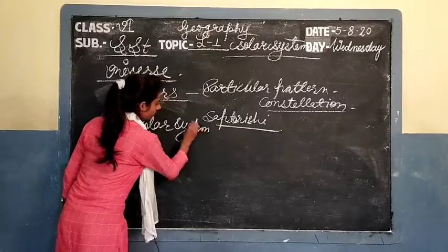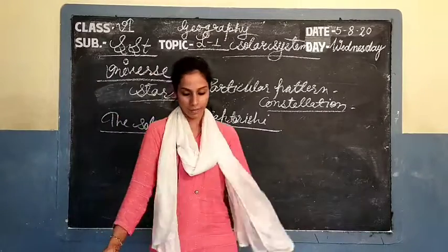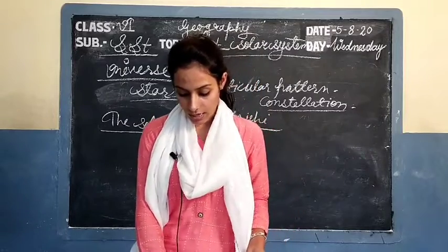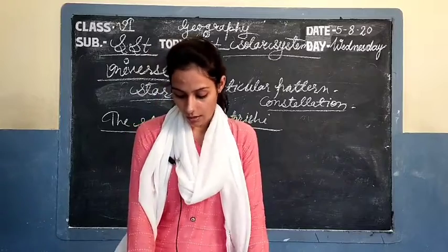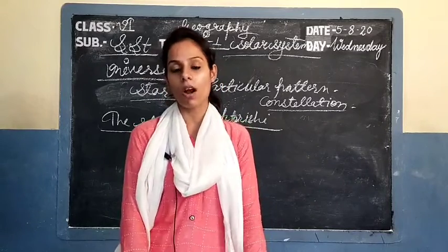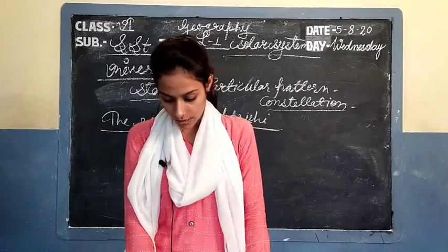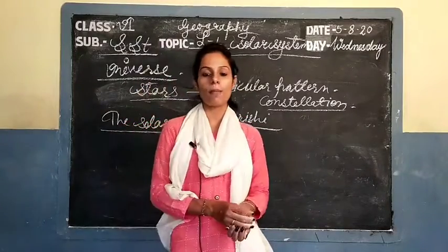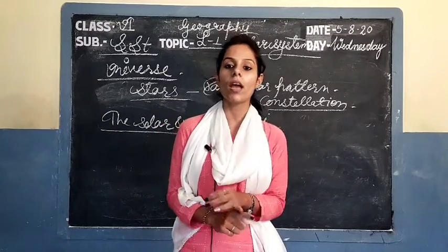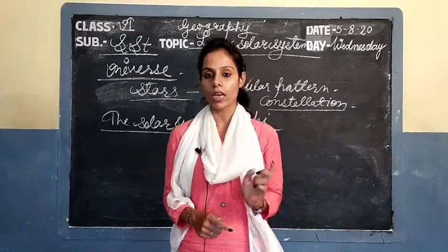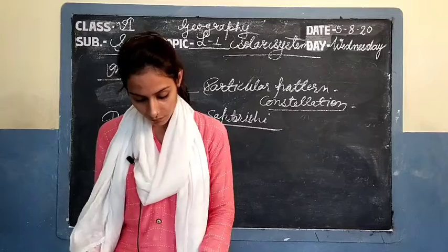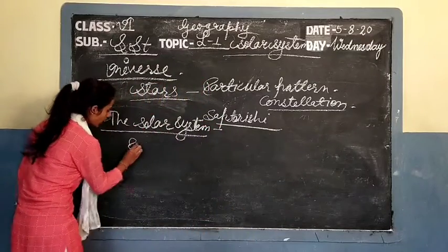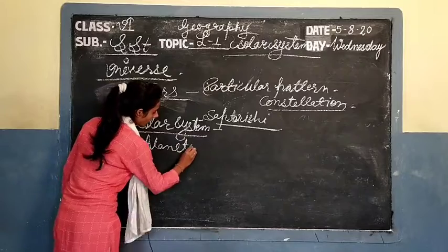Now let's learn about the solar system. The solar system means the family of the sun. The sun and the 8 planets that revolve around the sun are members of the solar system. Solar system mein total 8 planets hain.